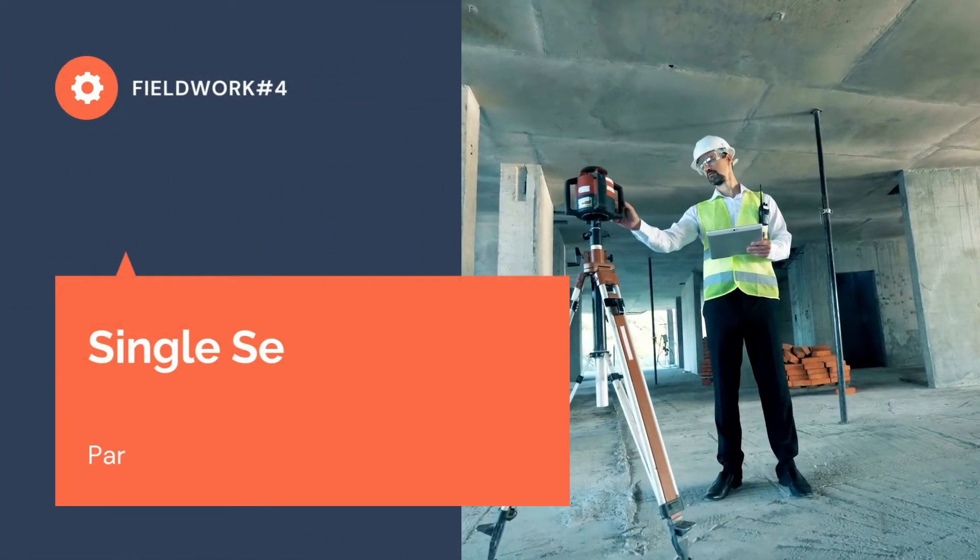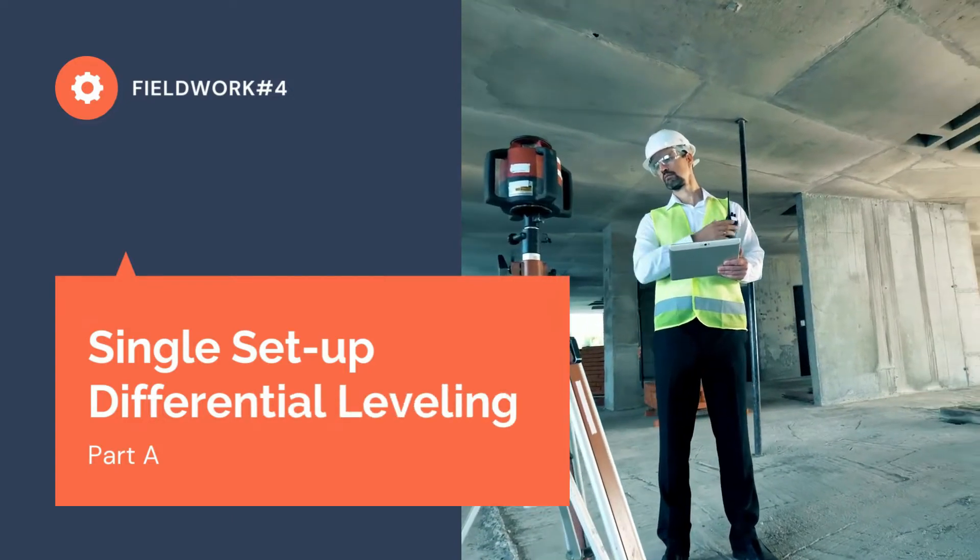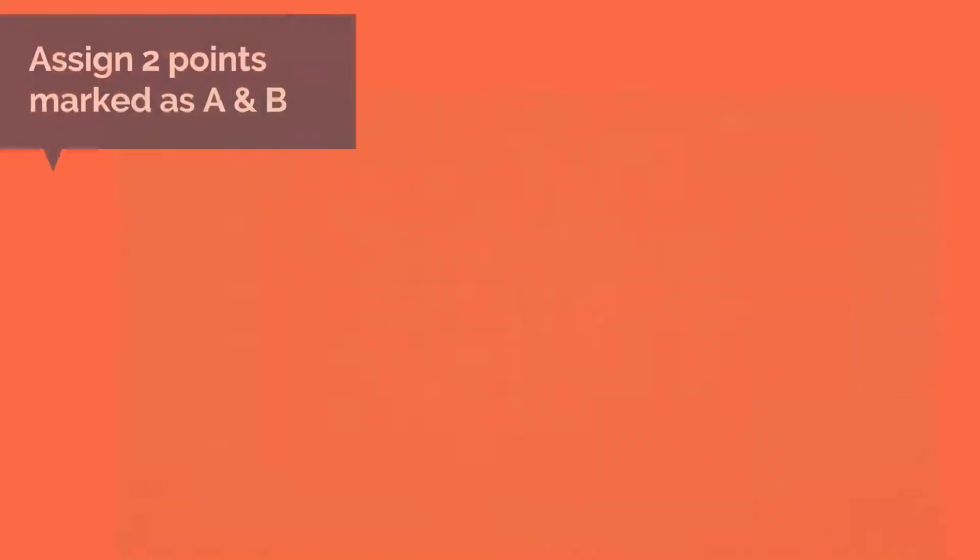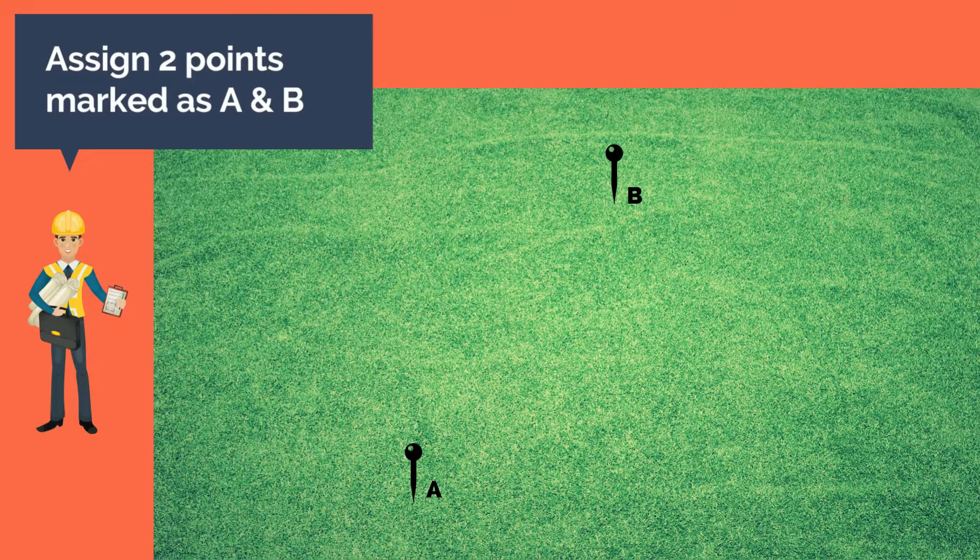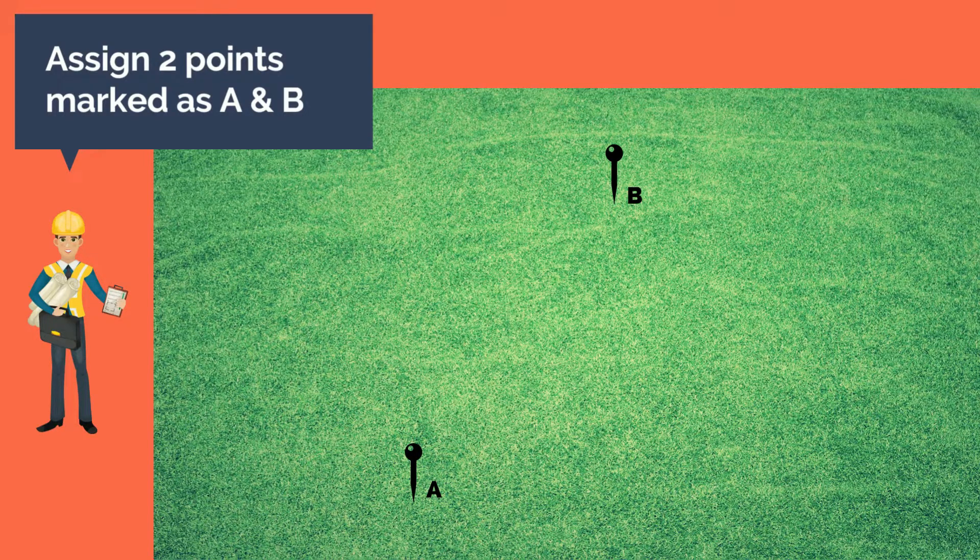Now that we know these key terms, let us talk about how single setup differential leveling is being done. First, the instructor assigns the location of two points, marked as A and B, which are intervisible with the instrument setup placed between the points.